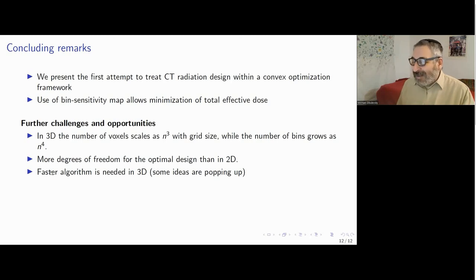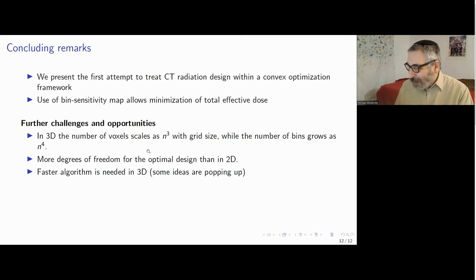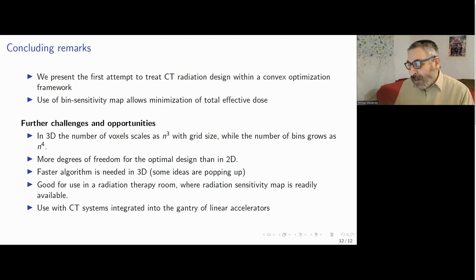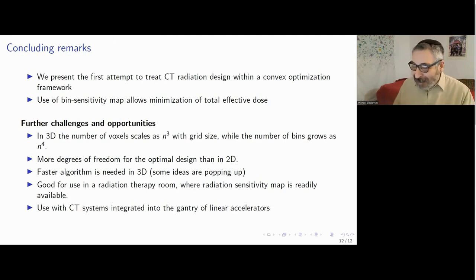On the other hand, we currently use explicit matrix inversion to obtain matrix G, which is infeasible in three dimensions. We are working on modifications to our approach that will allow such computations. One promising application is in radiation therapy rooms, where sensitivity maps are already present for radiation therapy planning — especially in systems where the CT is integrated with the gantry of linear accelerators used in therapy. This may be the first place to implement our method.